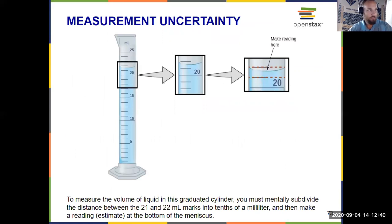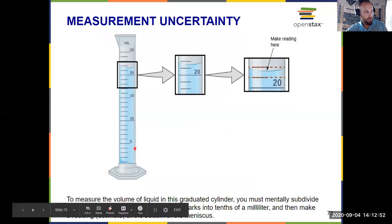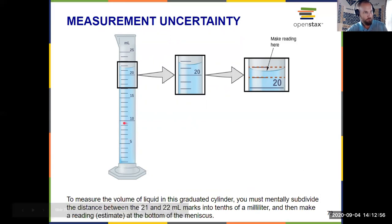If I look at a graduated cylinder, the first thing I need to do is figure out what each of the markings represents. I can see that going from 5 to 10, there are four markings in between. So I can deduce that each marking represents one milliliter: 6, 7, 8, 9, 10.